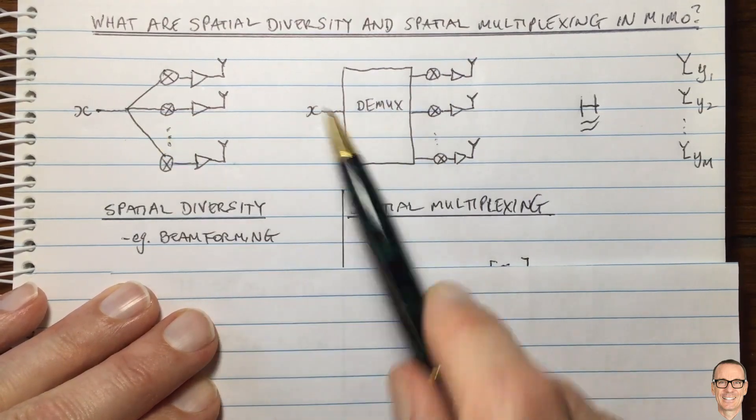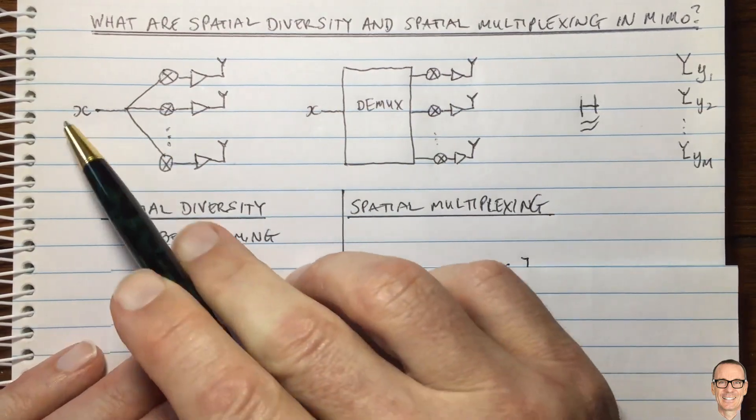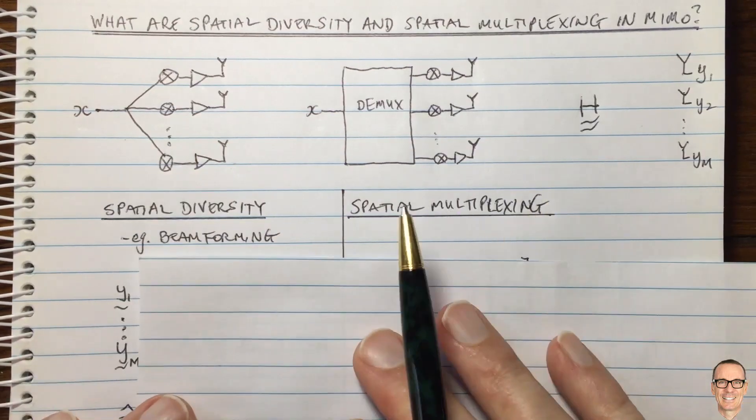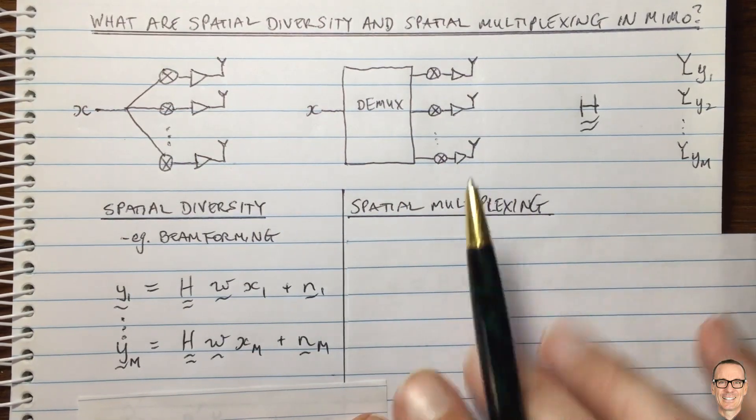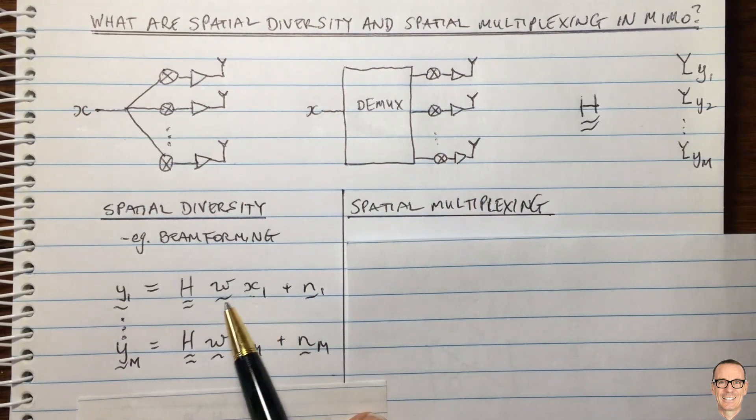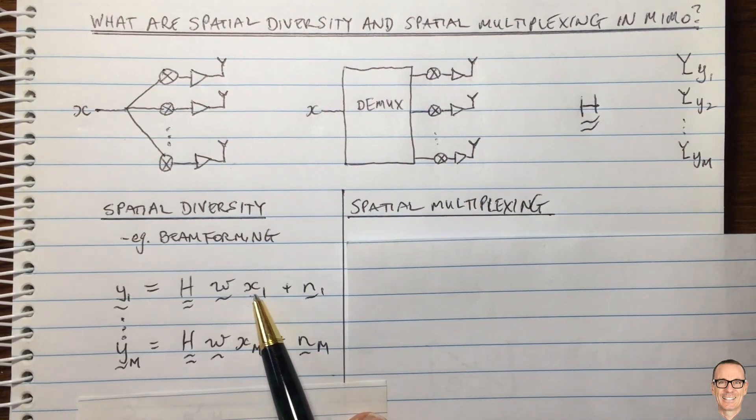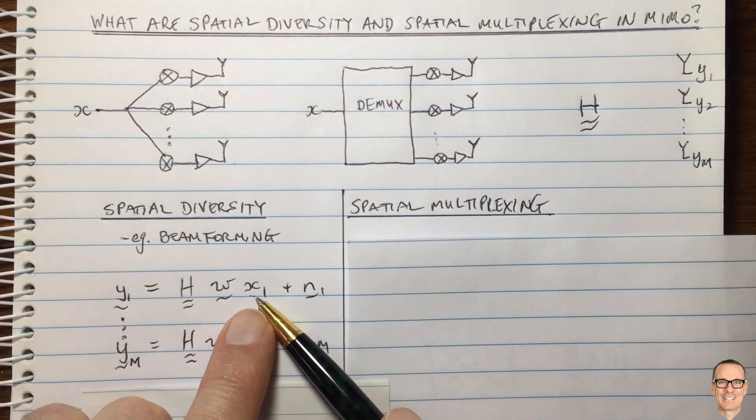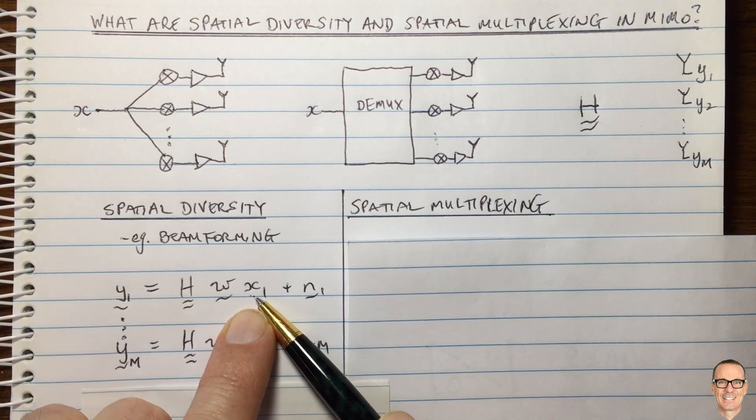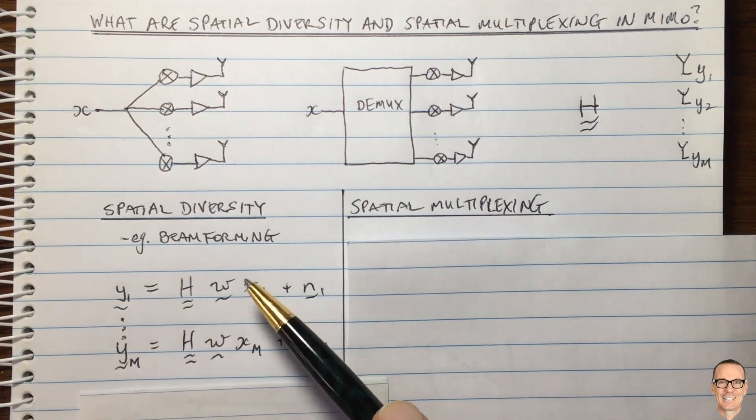So this is a comparison between the two. Let's look at the equation for this one here. In this case, we have the equation for the first symbol. The first symbol, this is a scalar which represents that complex number, which is the constellation point. Again, for more details about constellation points, there's another link in the description below this video.